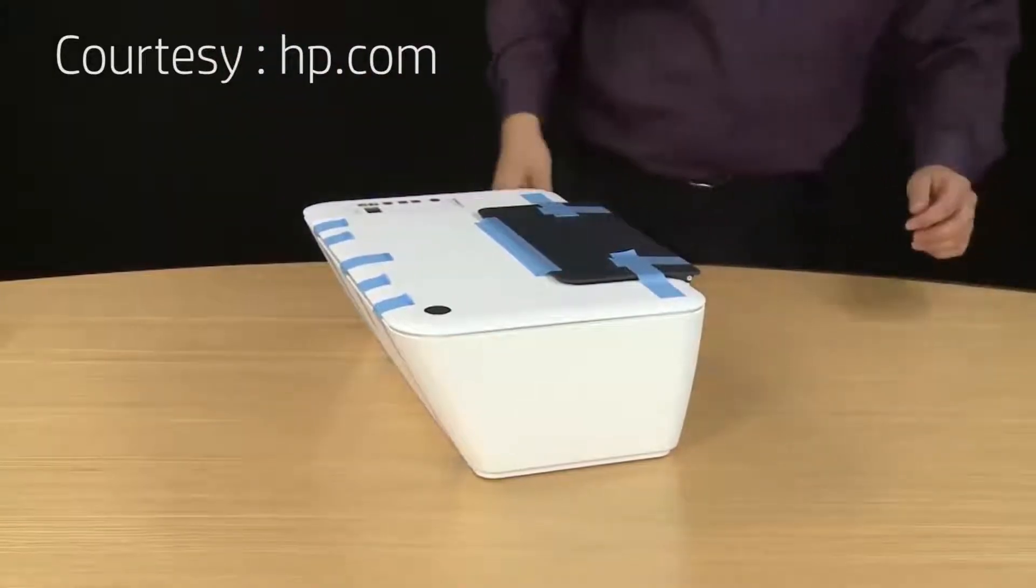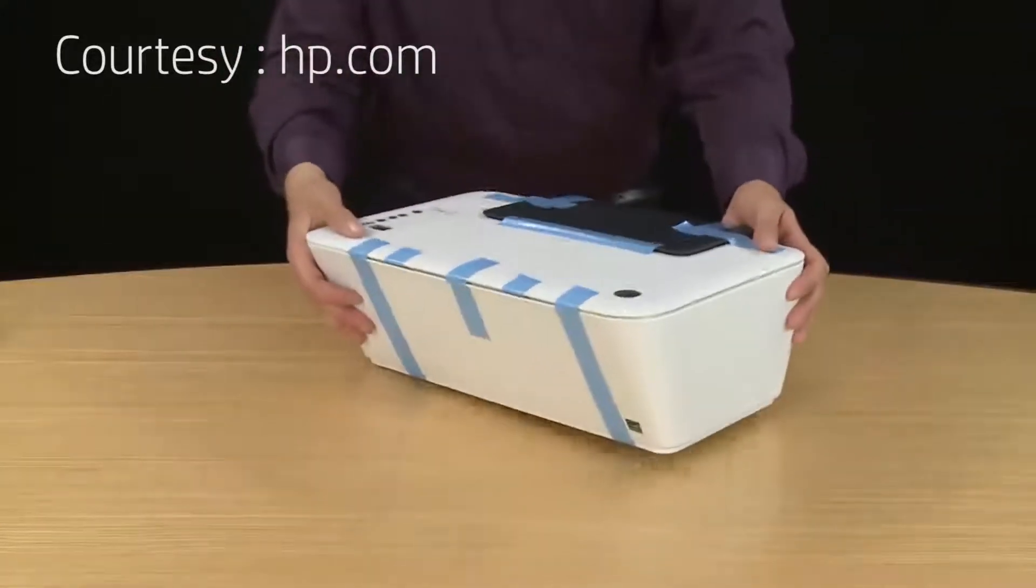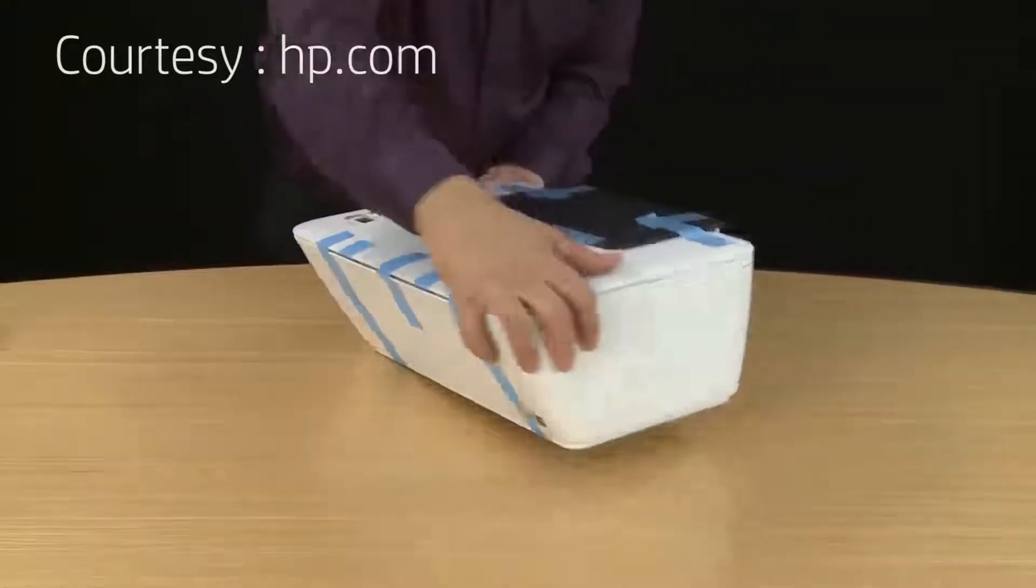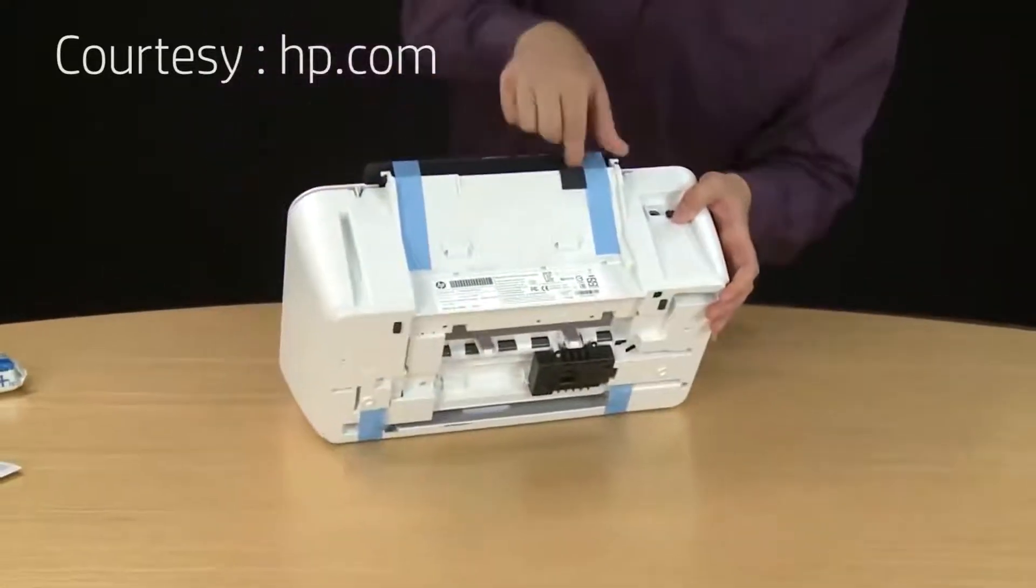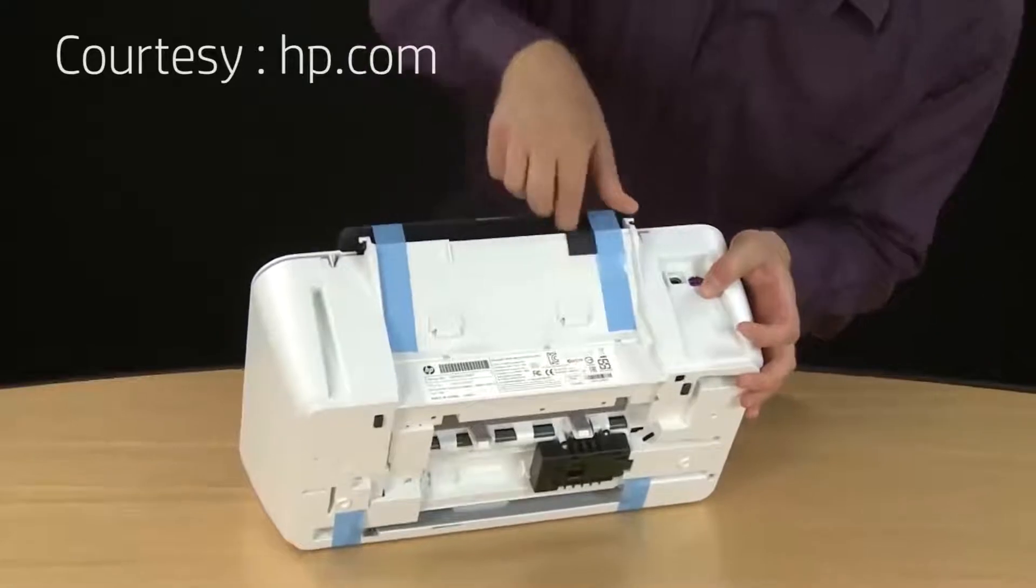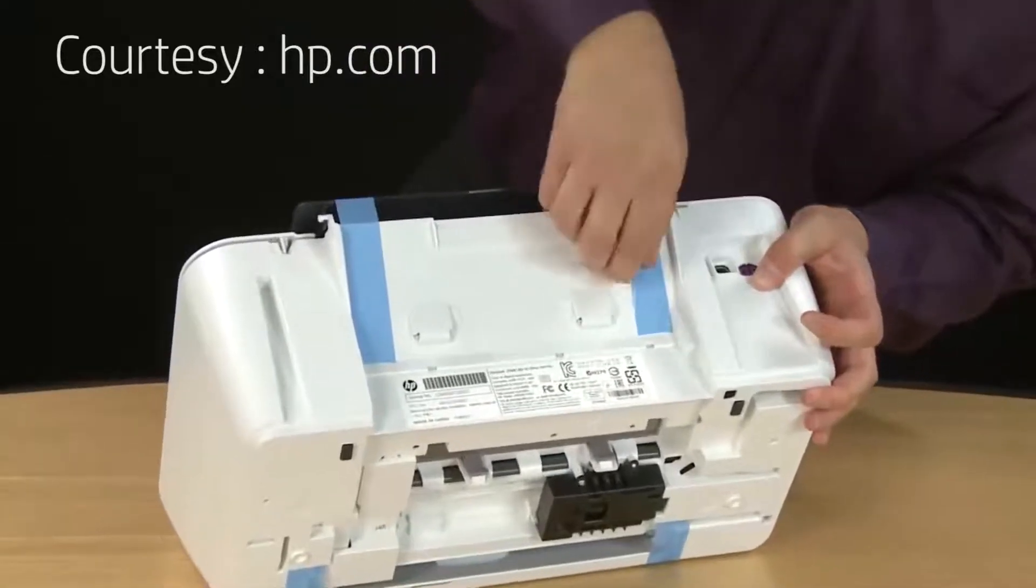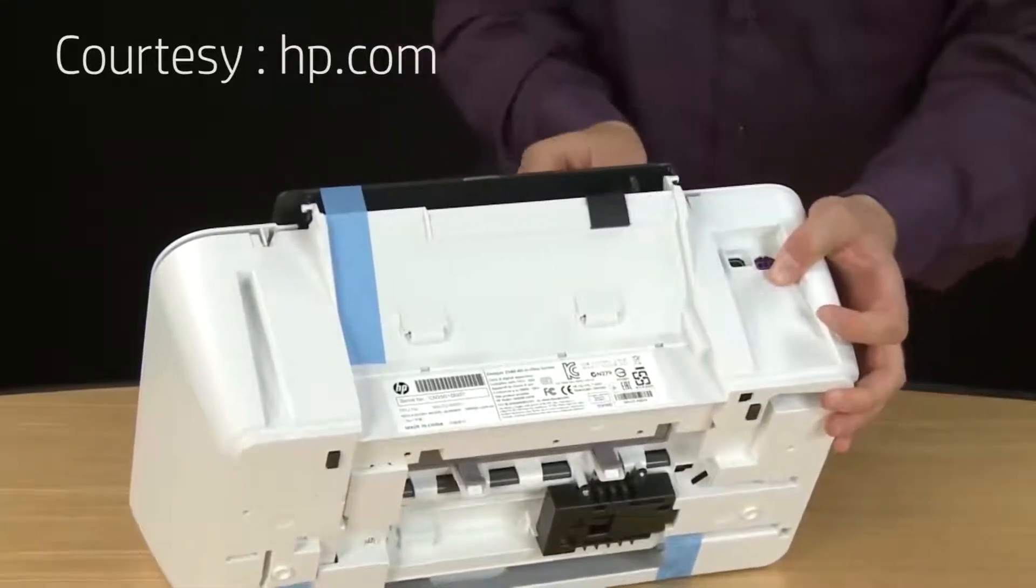Once the printer is free from the bag, you can remove any tape or other packaging materials that are on or inside the printer. I like to start by taking the tape off the back of the printer. If it's easier for you, gently set the printer on its front and then just peel back the tape. It's designed to come off fairly easily and not leave any residue on the printer.